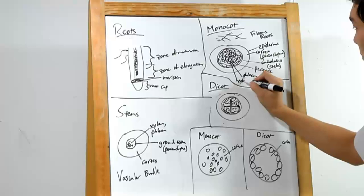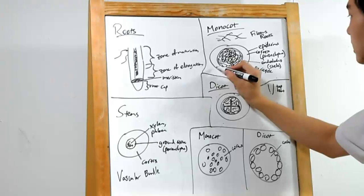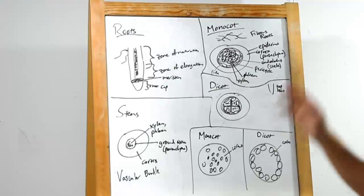And here's something that dicots don't have in the very center, the pith. This is parenchyma just like the cortex. Just keep in mind that dicots won't have that.